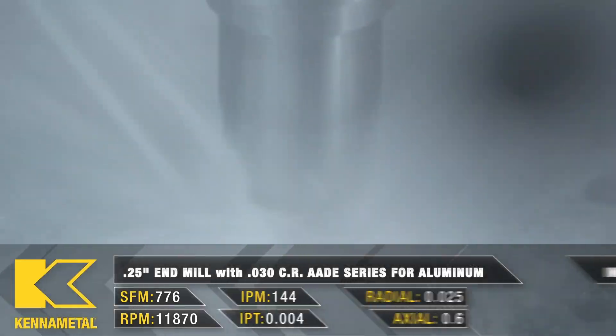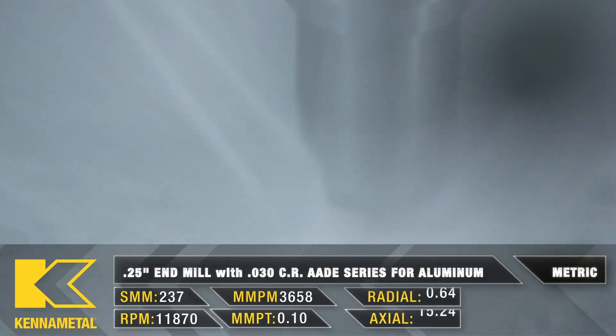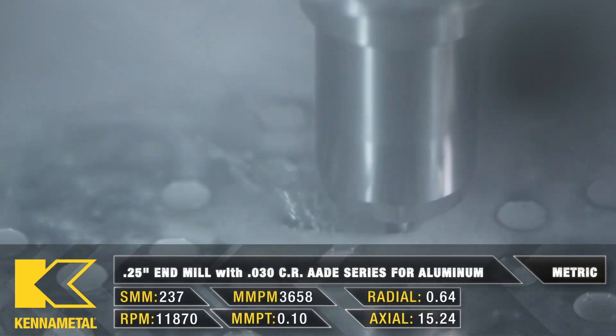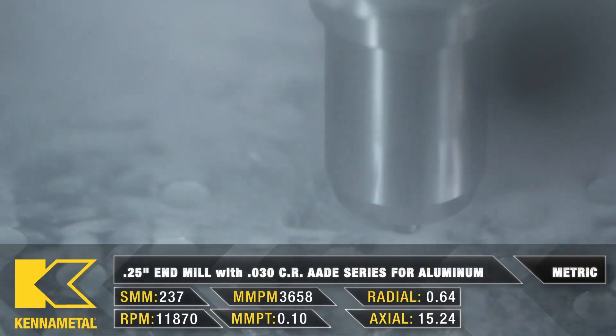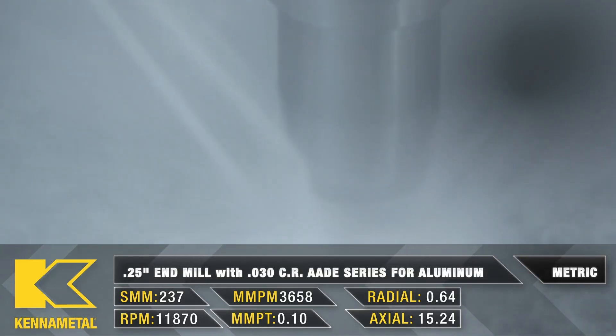You flip it over in many cases, but not all, and rough the other side, bringing all of the walls close to the finish tolerance, maybe leaving thirty thousandths, fifty thousandths, depending on the application.